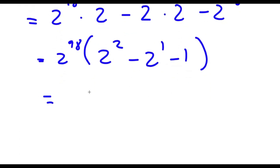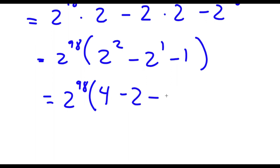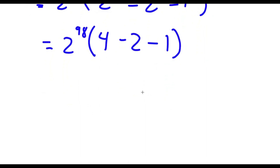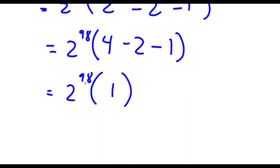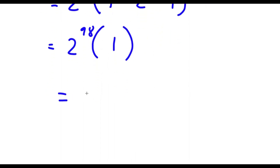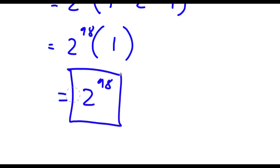Now I'm going to simplify. This gives me 2 to the power of 98 times — 2 to the power of 2 is 4, minus 2 to the power of 1 which is 2, minus 1. So 4 minus 2 is 2, and 2 minus 1 is 1. So I have 2 to the power of 98 times 1, which is simply 2 to the power of 98. So this is my answer.